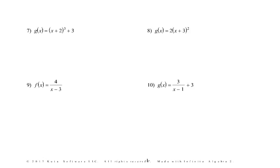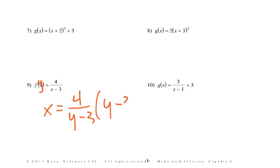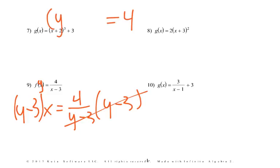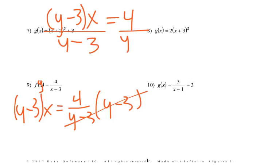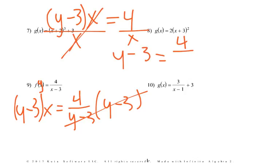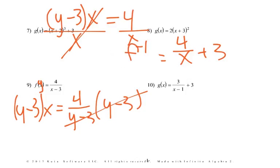Now for 9 and 10 we're dealing with rationals. Start the same way — switch the y and the x: x equals 4 over (y minus 3). Times both sides by (y minus 3) — those cancel — we're left with 4 on the right and (y minus 3) times x on the left. Divide by x because we're trying to get y by itself: y minus 3 equals 4 over x. Add 3: y equals 4 over x plus 3. Change that to the inverse function.